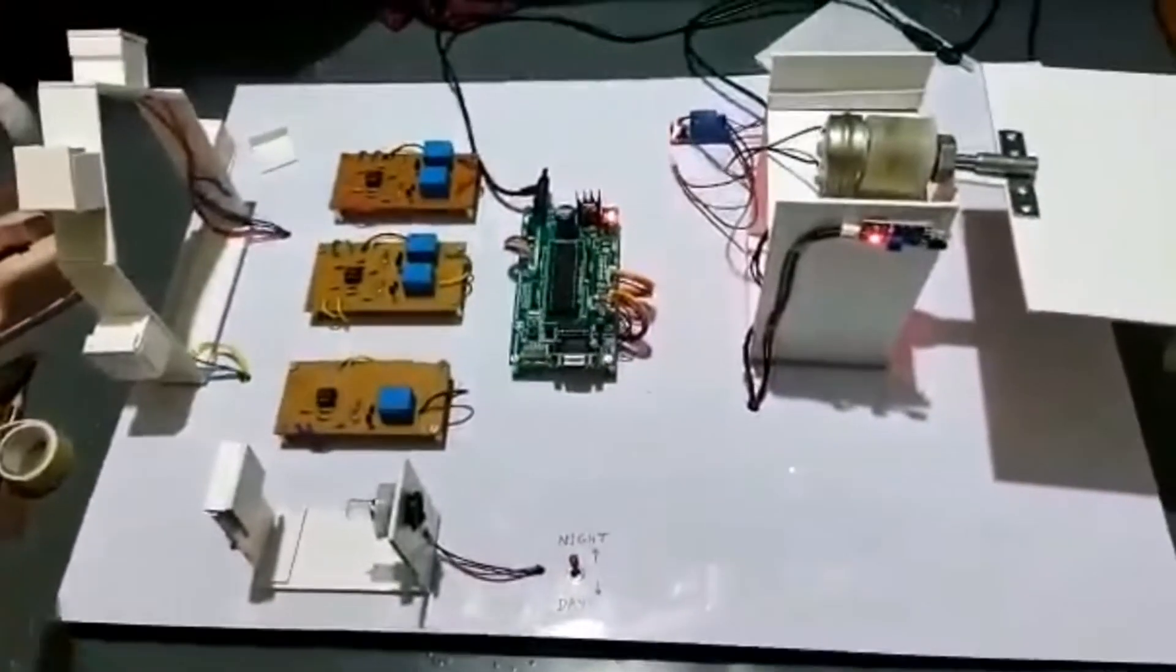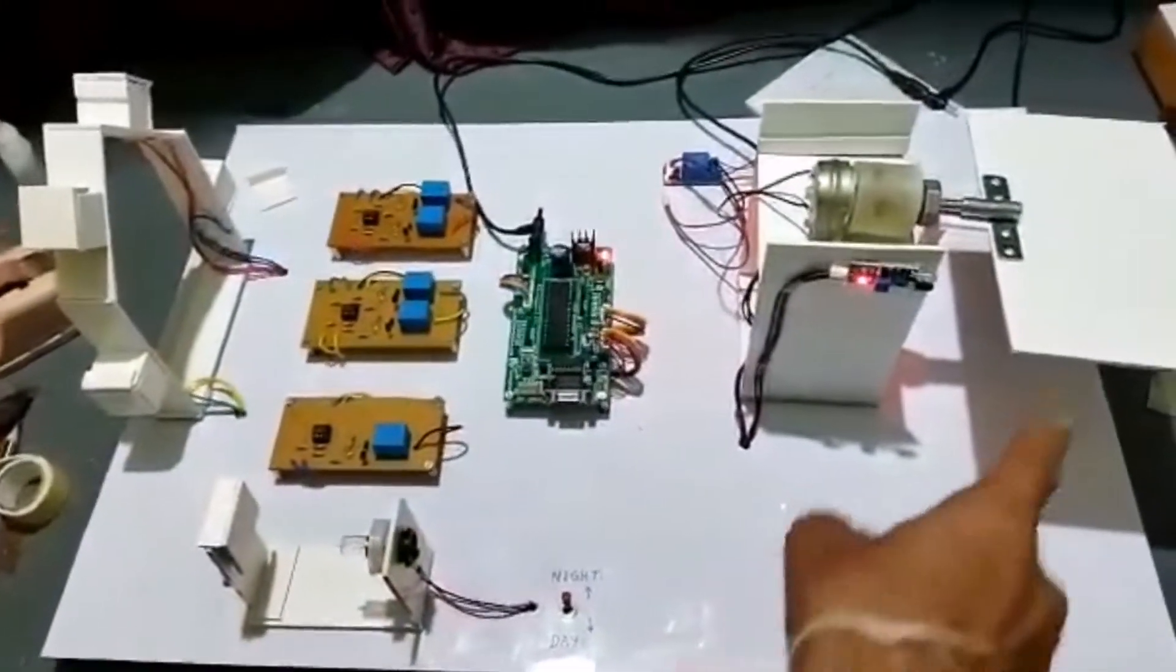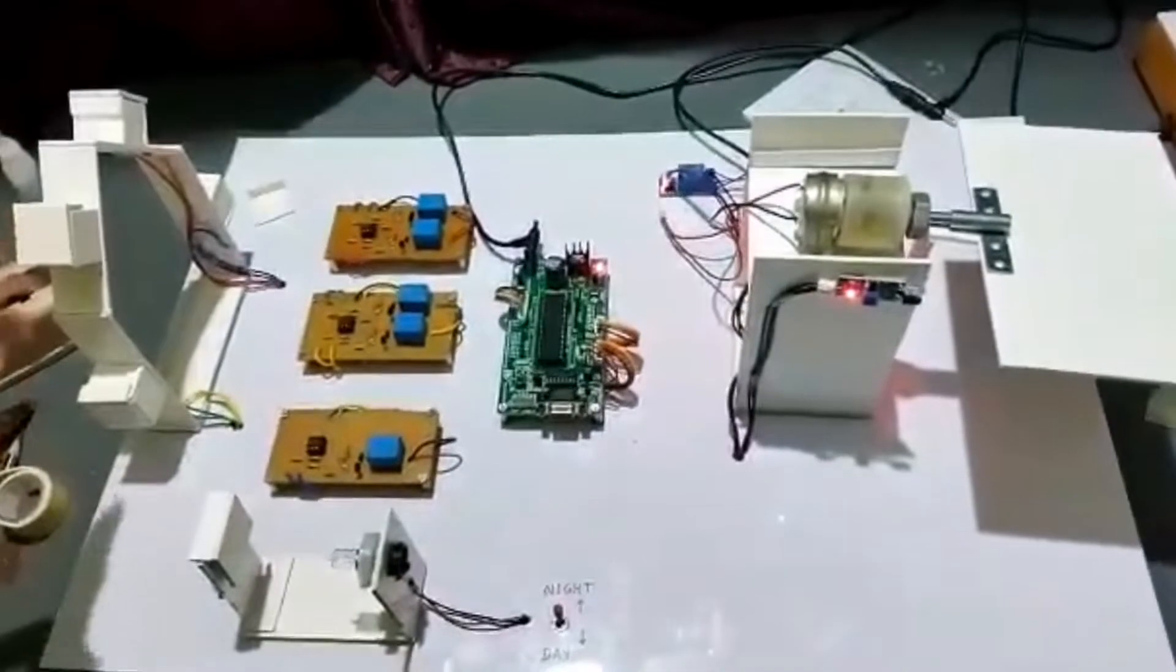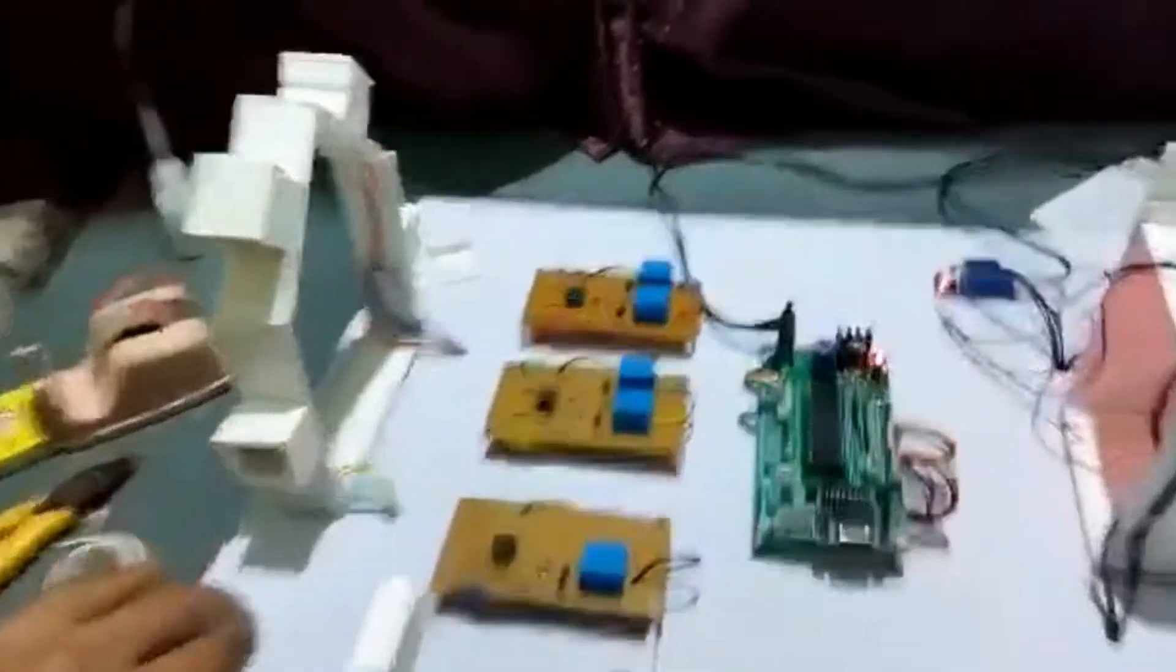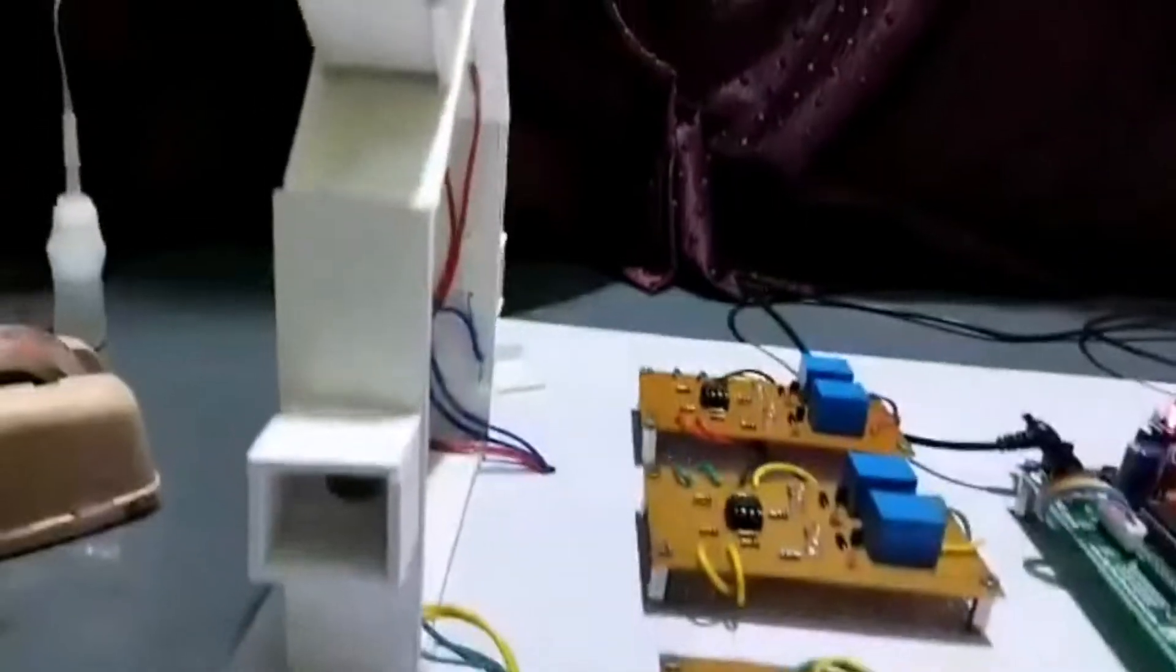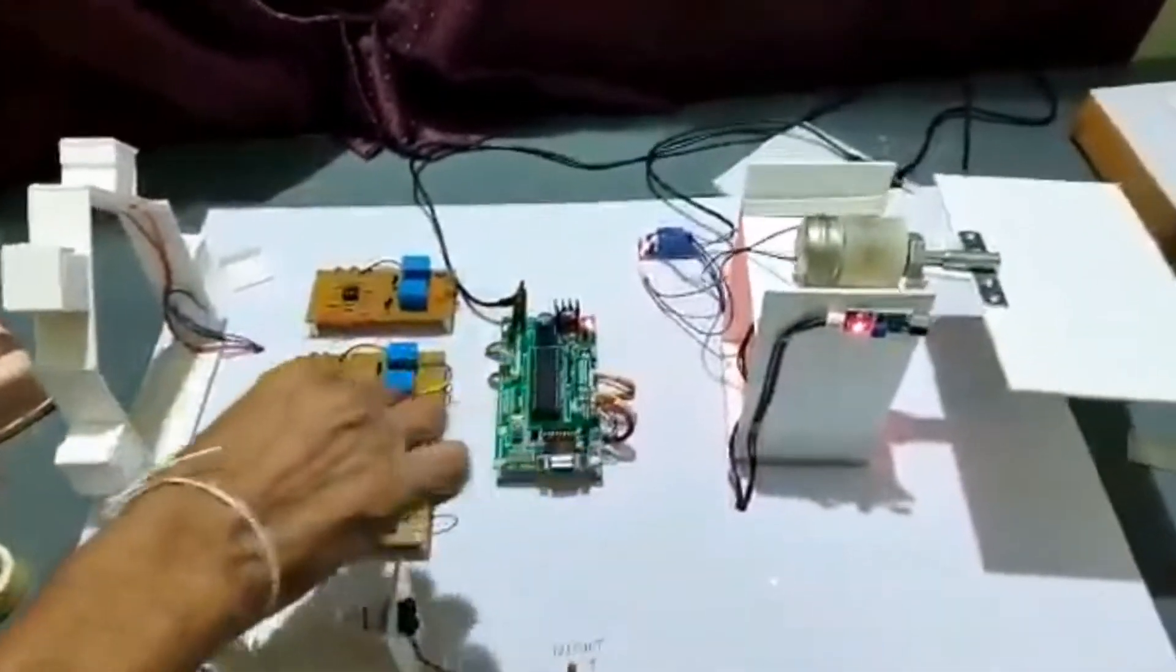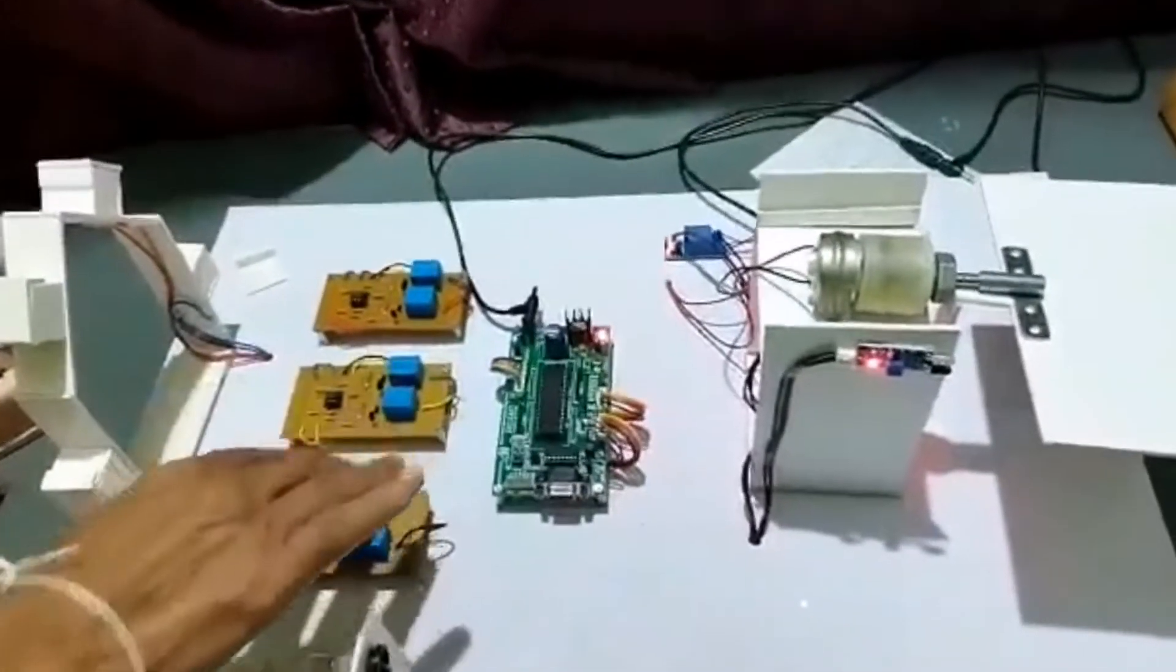Good evening to everybody. This project name is solar tracking system. This is the solar panel, this is the motor, and these are the light sensors - LDRs. I am using here LDRs, like this: one, two, three, four LDRs are there. This LDR signal is converted into digital signal by using this converter signal circuit.